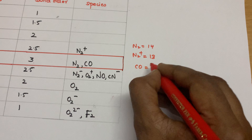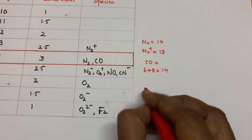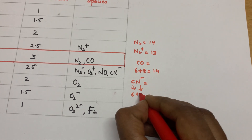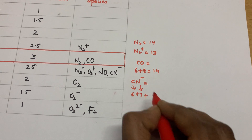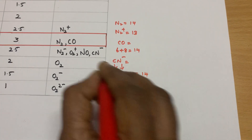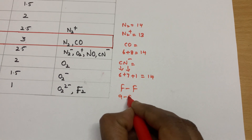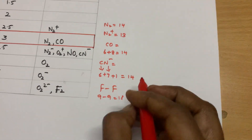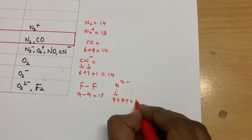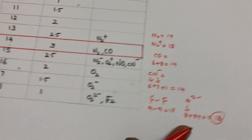Fluorine F2: 9 plus 9 equals 18 electrons, so bond order is 1. For O2²⁻: 8 plus 8 plus 2 electrons equals 18 electrons, so bond order is also 1. Like that you have to follow — you need not memorize, just use this simple logic.